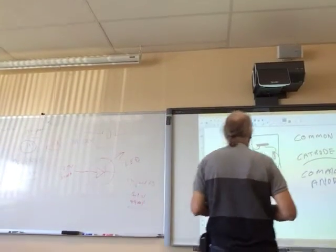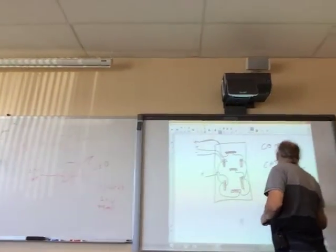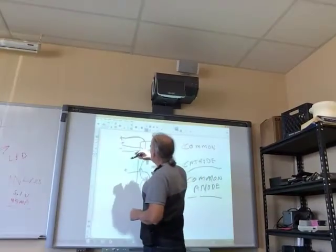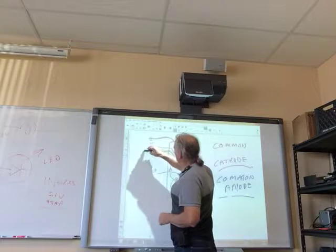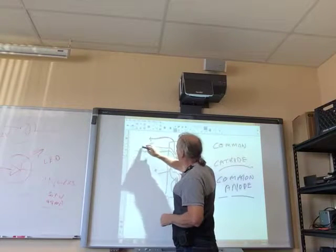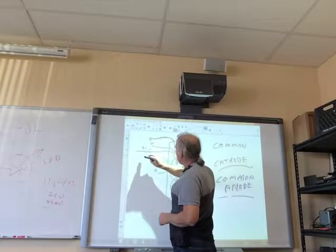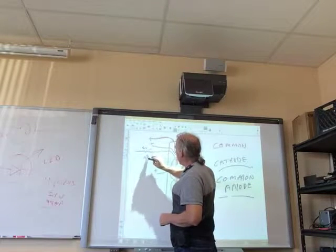What you do is you put a limit resistor on whichever one's the common. Say the negative is the common. We'll put a limit resistor on it, R1. We'll make it about 330 ohms.